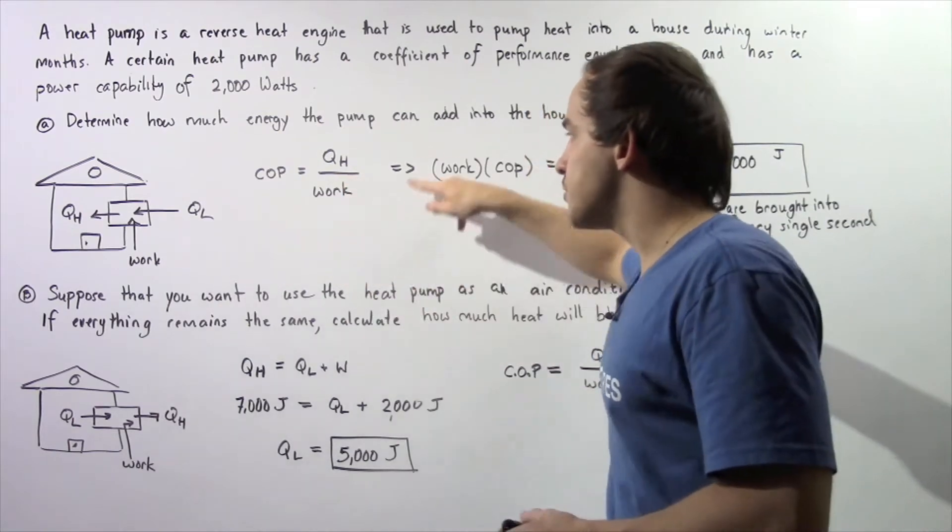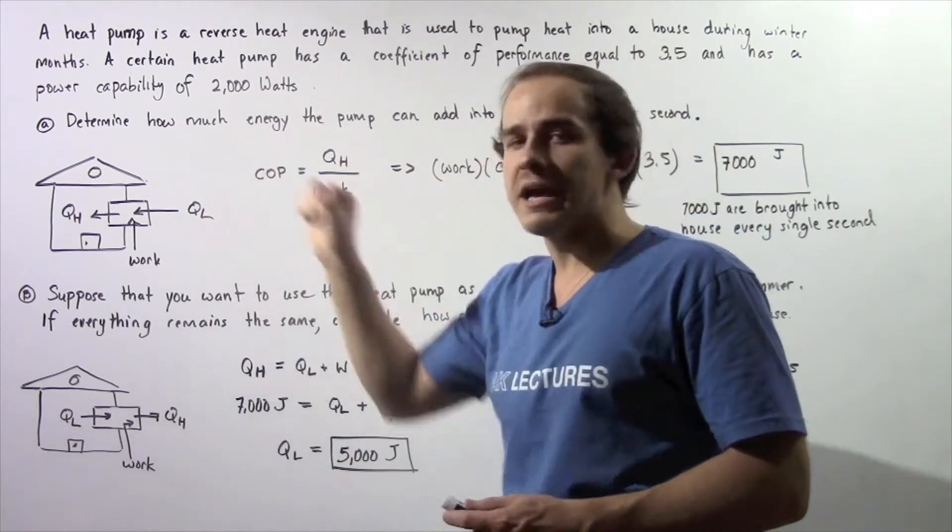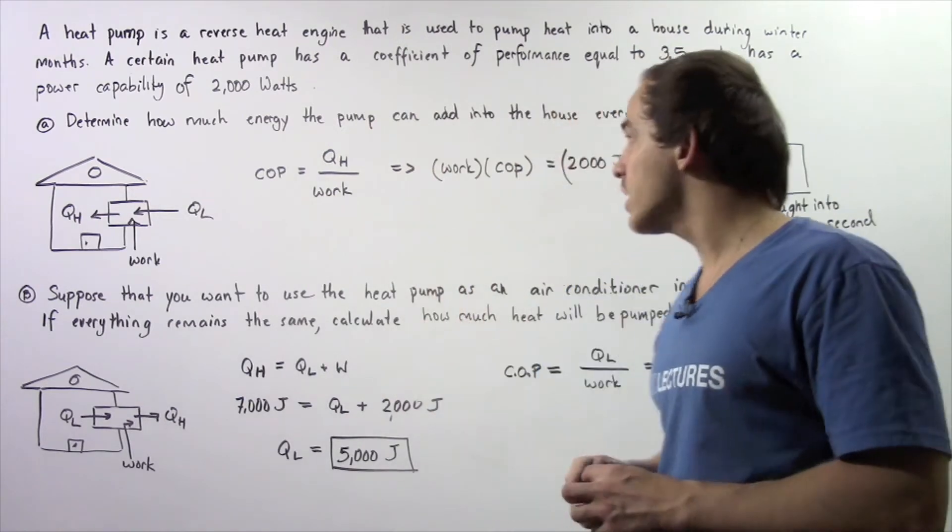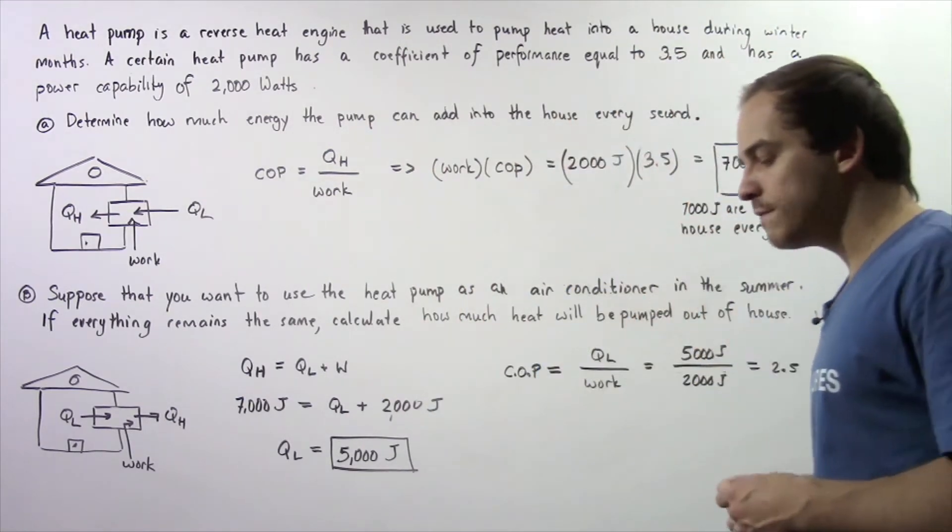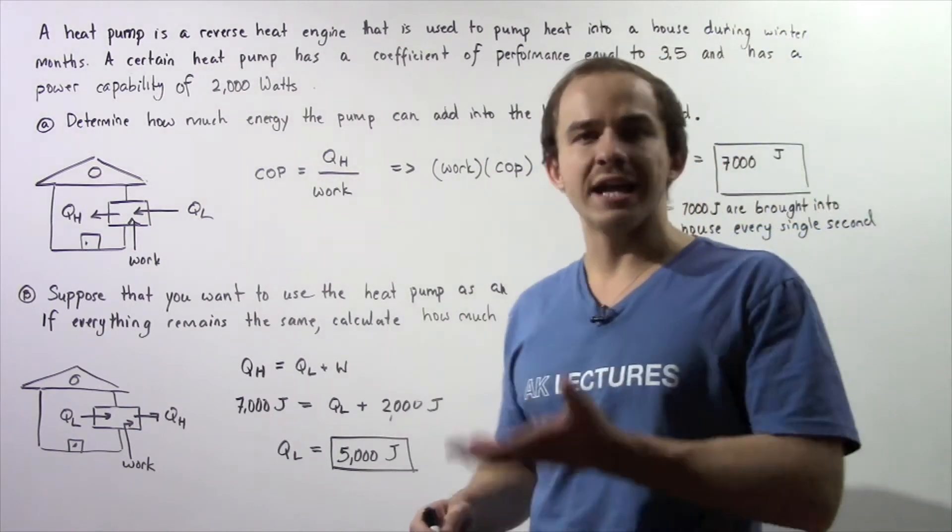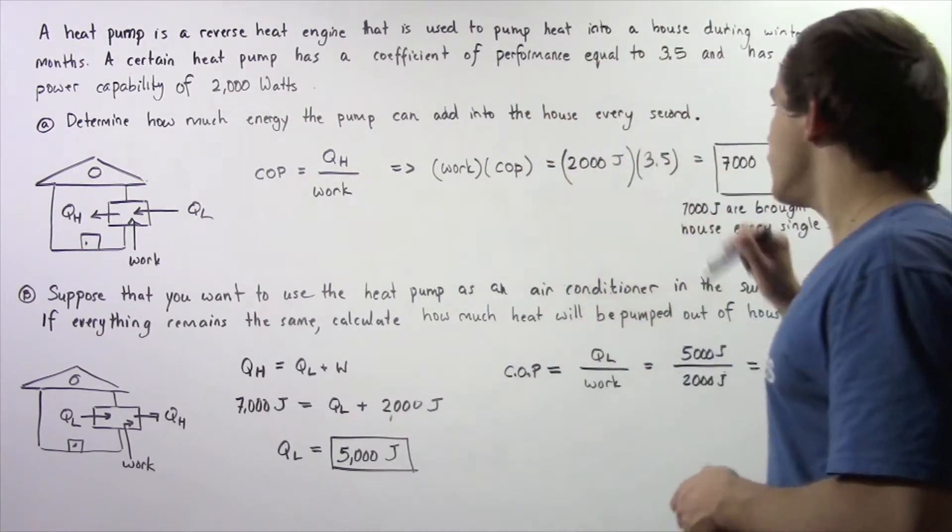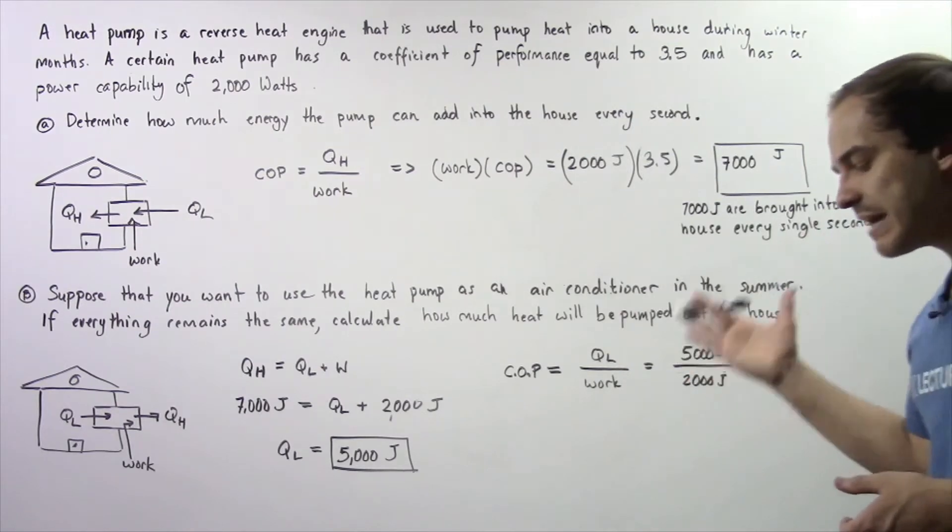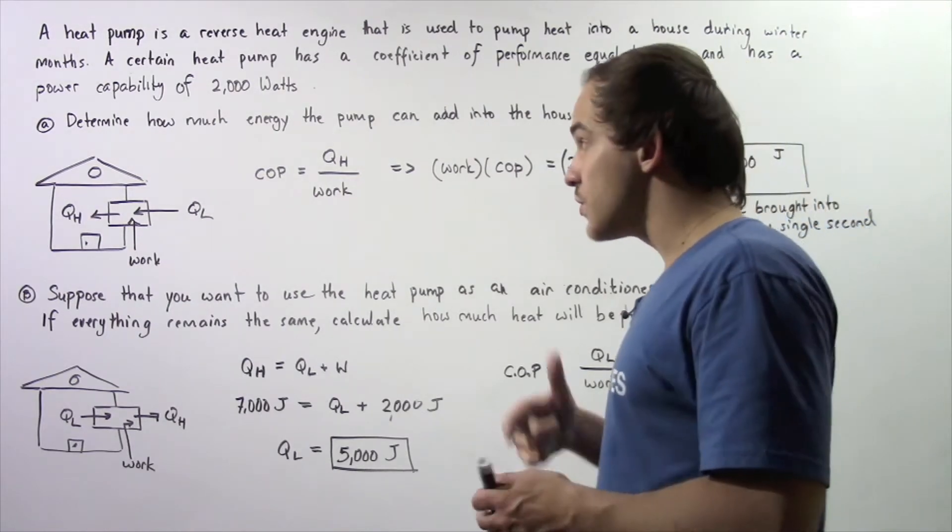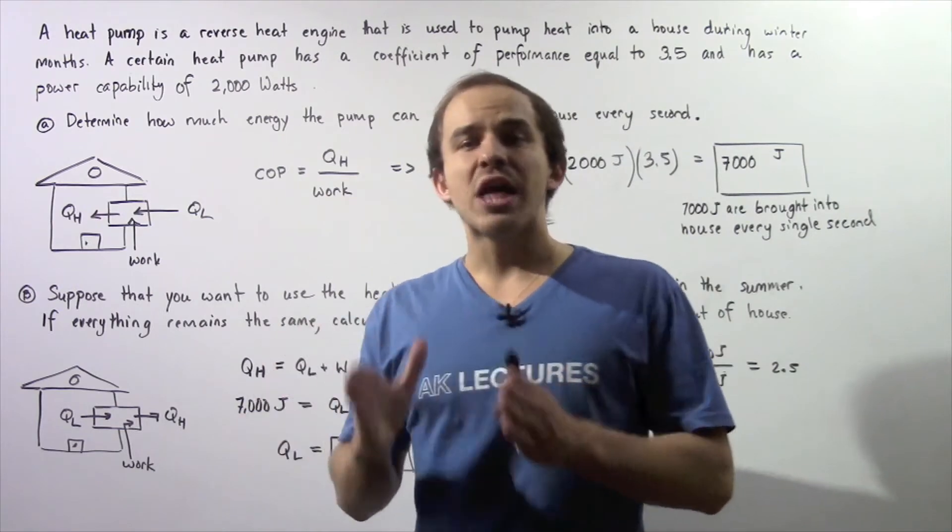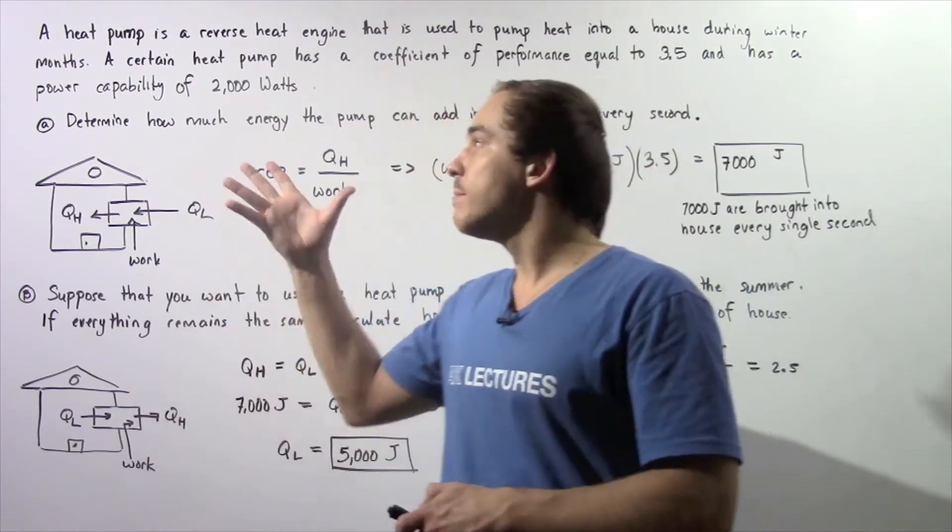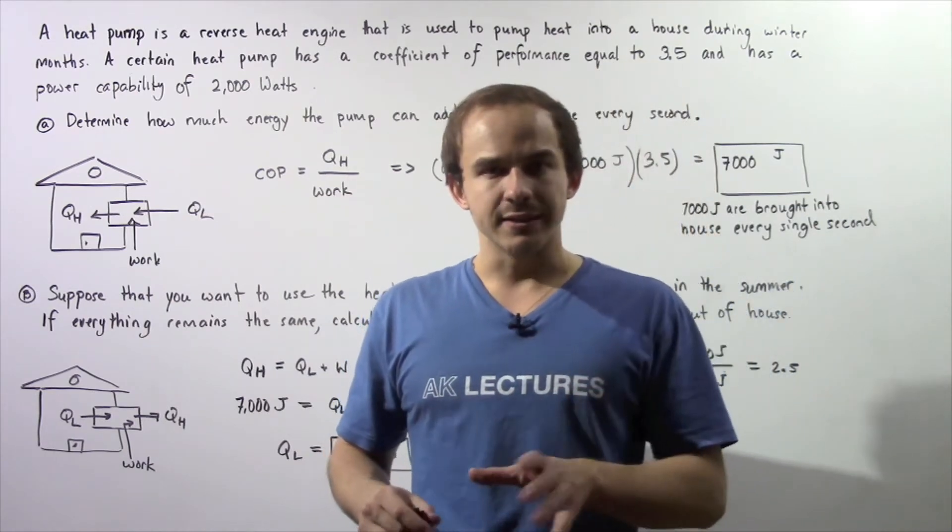We rearrange this equation and see that QH is equal to the product of the work and the coefficient of performance. 3.5 multiplied by 2,000 joules gives us 7,000 joules of energy. That means 7,000 joules of energy is brought into the house by this heat pump every single second.